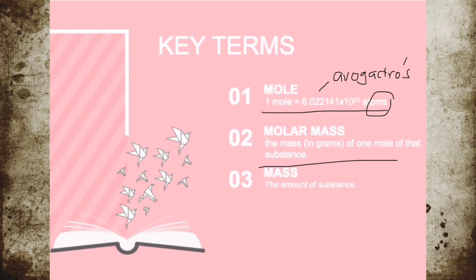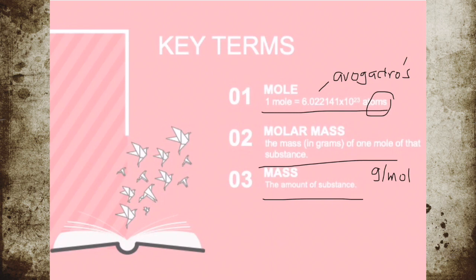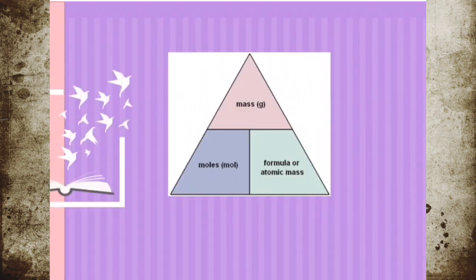Molar mass is the mass in grams of one mole of that substance — by definition, one mole of a substance with a unit of grams per mole. The molar mass of an element is the mass number for the element that we find on the periodic table. The formula weight, or AMU, will be the same number as the molar mass. Mass is just the amount of a substance, and the unit will be in grams.